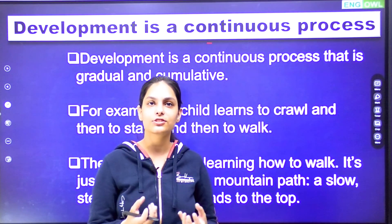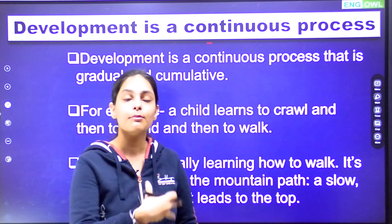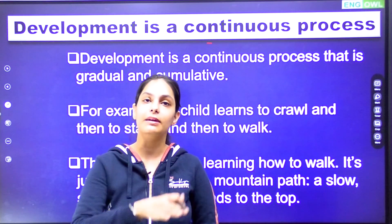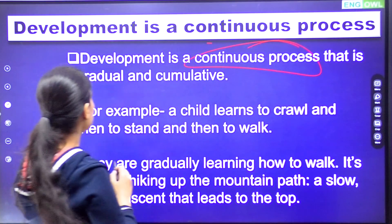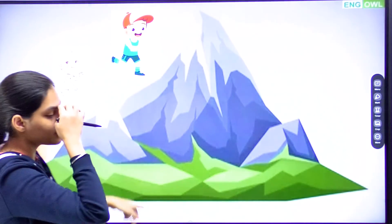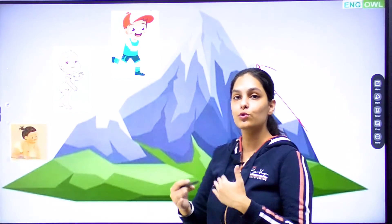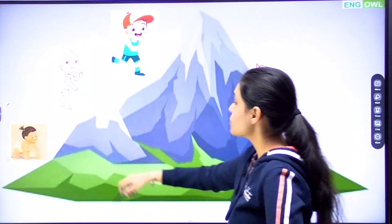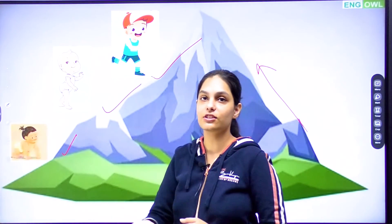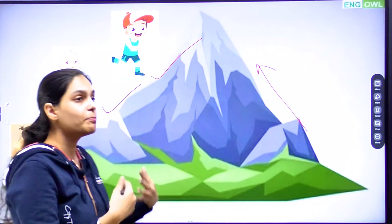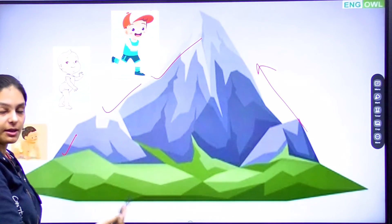The first principle: development is a continuous process that is gradual and cumulative. When we go to a mountain peak, we don't go directly to the top. We go to the lower level first, then pause, then continue upward. We take pauses so that our motivation is maintained and our body doesn't get exhausted. Our growth and development works the same way.